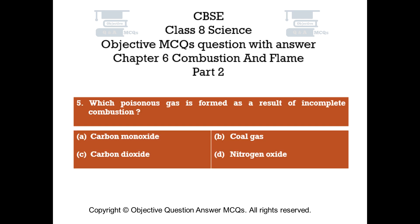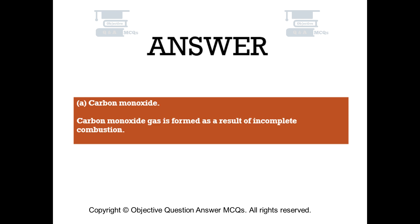Question number 5. Which poisonous gas is formed as a result of incomplete combustion? Option A, carbon monoxide. Option B, coal gas. Option C, carbon dioxide. Option D, nitrogen oxide. The right answer is Option A. Carbon monoxide gas is formed as a result of incomplete combustion.